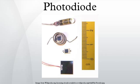Photoconductive mode: In this mode the diode is often reverse biased. This reduces the response time because the additional reverse bias increases the width of the depletion layer, which decreases the junction's capacitance. The reverse bias also increases the dark current without much change in the photocurrent.